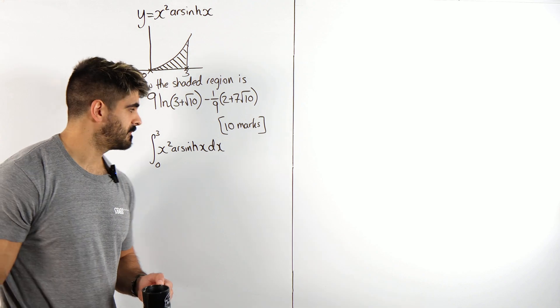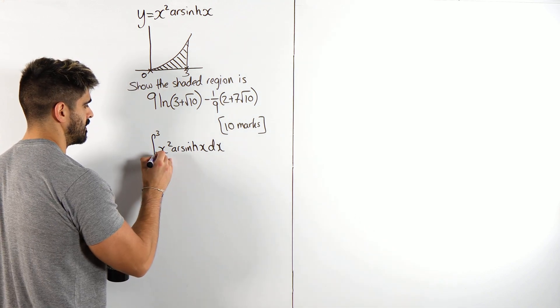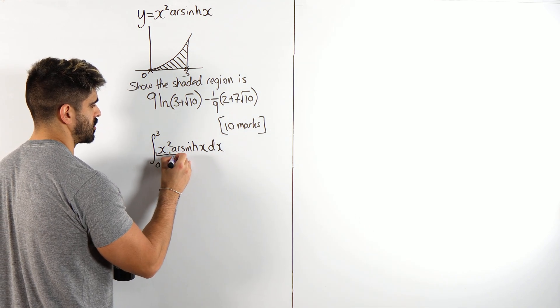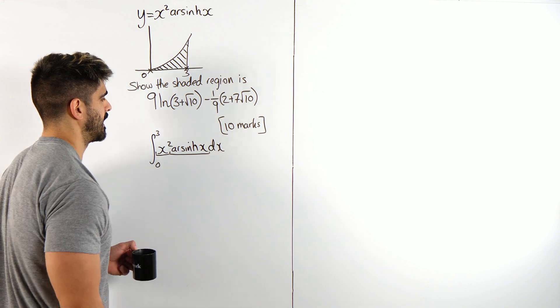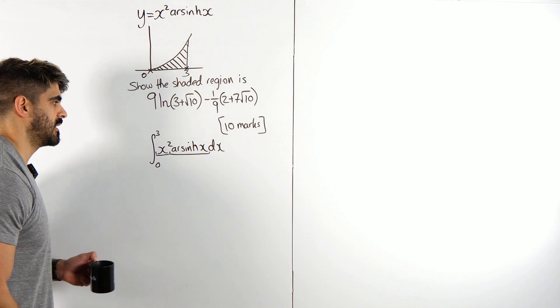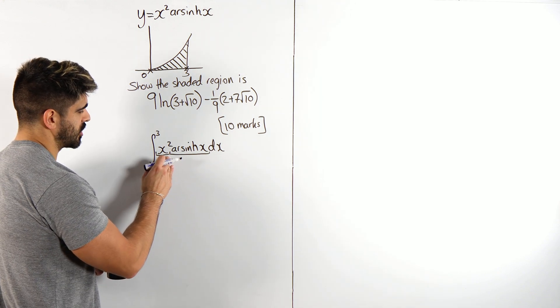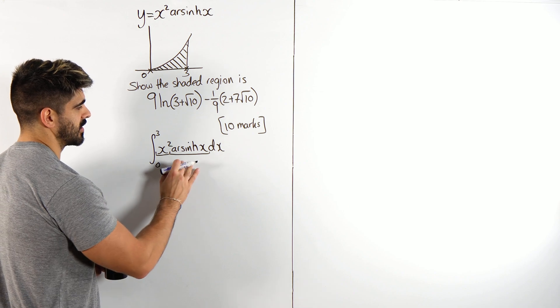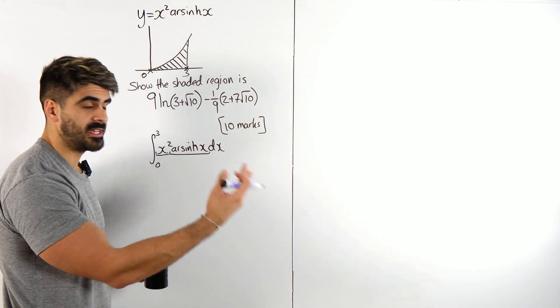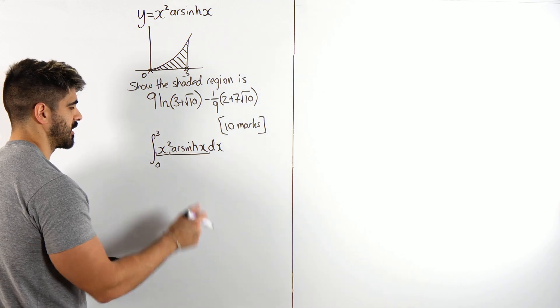Now, this is going to be a parts question, yeah, because we have a polynomial type expression and an inverse hyperbolic. Now, there's a trick to this. Now, if we do parts, we're not actually able to leave the X squared because I don't know what arshine integrates to. So, we're going to have to swap these around, okay?